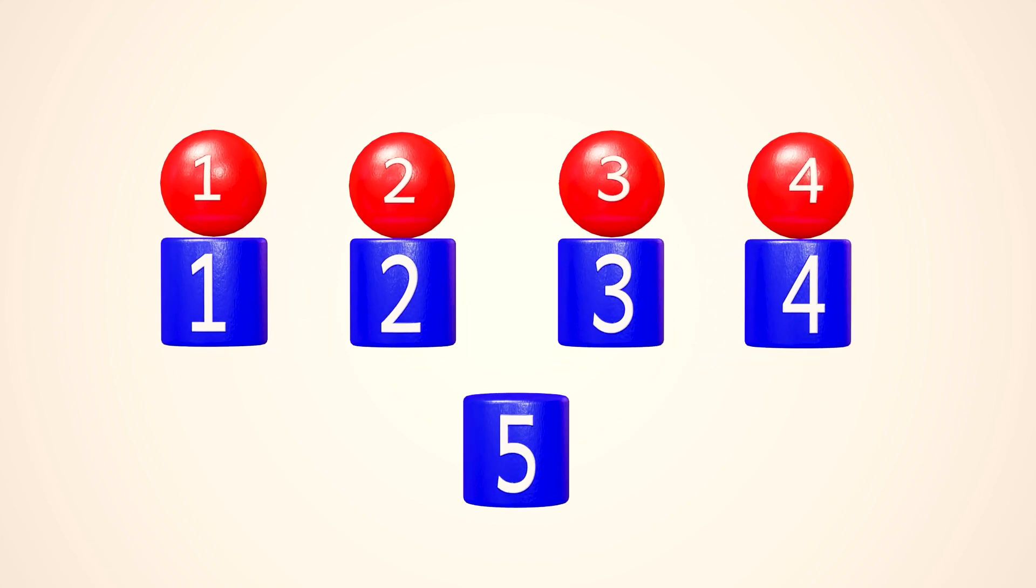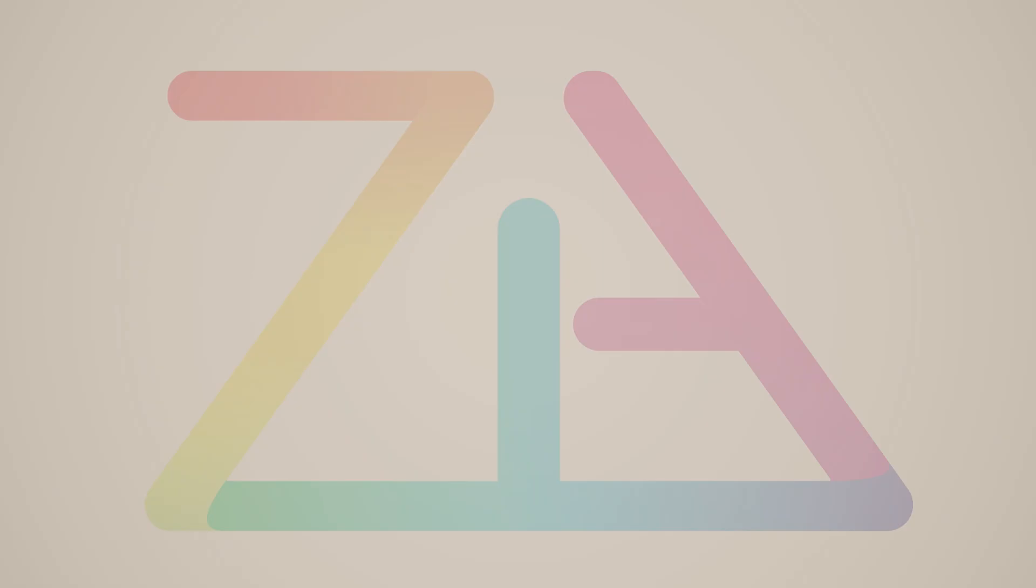So, the number of the red spheres is one less than the blue cylinders. Let's continue playing with other objects.